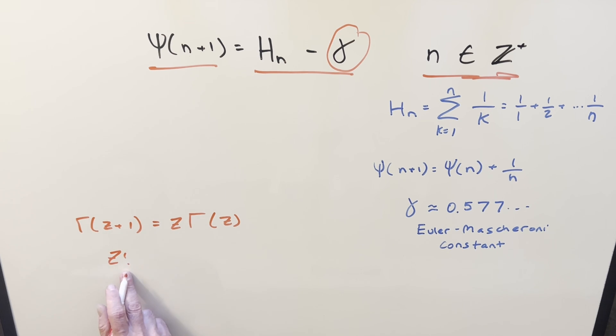For the factorial, if we add z factorial, this is going to be the same thing. Because if we add z factorial, this is going to be the same thing as z times z minus 1 factorial.